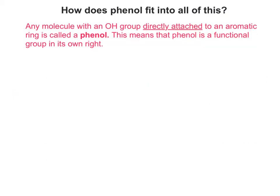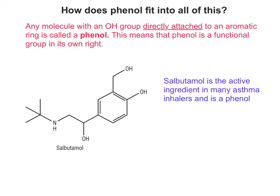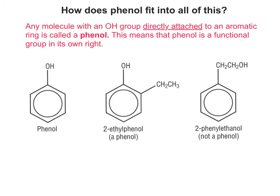Thinking about phenol — phenol isn't one molecule on its own. It's basically any molecule that has an OH group directly attached to an aromatic ring. So the word phenol actually refers to a family of compounds that have this functional group within them. For example, salbutamol, used in asthma inhalers, is considered a phenol because of this part of the molecule. It's important to remember when something might look like a phenol but actually isn't — for example, 2-phenylethanol isn't a phenol because the OH group is not directly bonded to the aromatic ring.